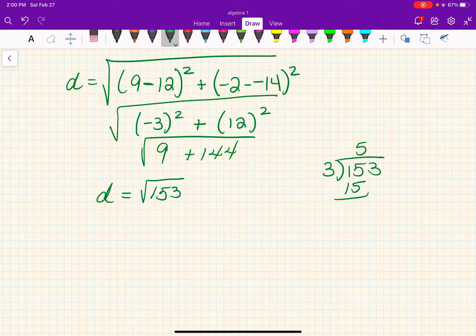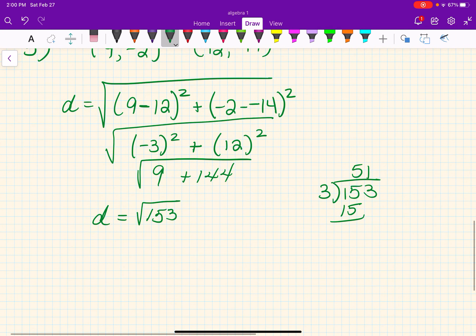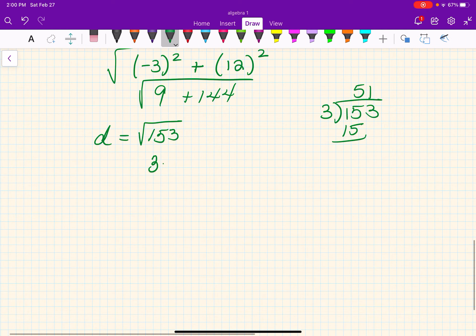So that's 15 and you get 51 and 3 also goes into 51 17 times. So 153 can be prime factored to 3 times 3 times 17. That was a tricky one. I didn't realize that at first. I thought it was a prime number.